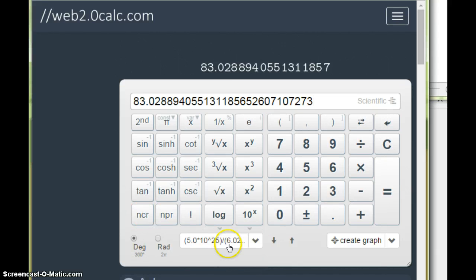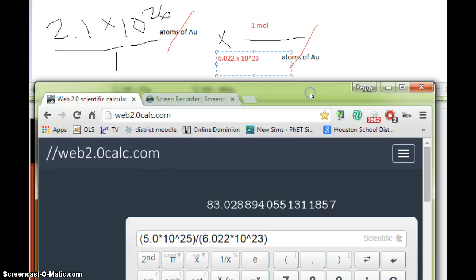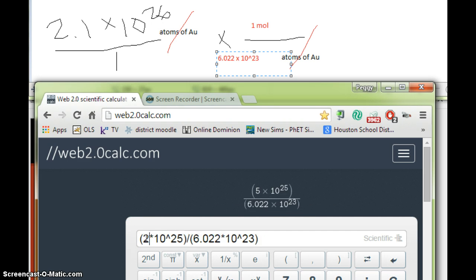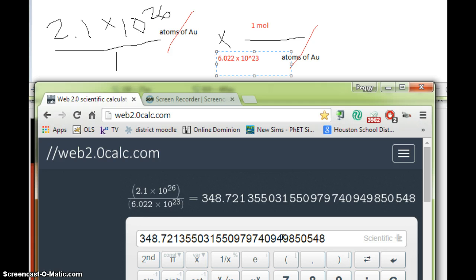So again, I'm just going to click down here to bring my previous equation up so I don't have to retype everything. And this time we wanted 2.1 and 10 to the 26th divided by 6.022 times 10 to the 23rd.